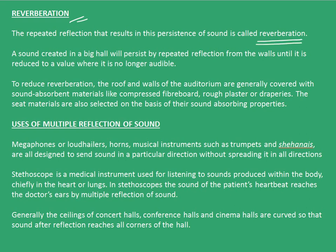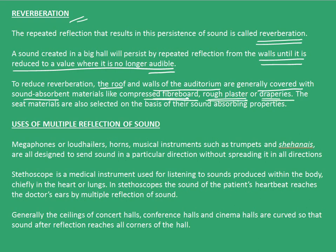A sound created in a big hall will persist by repeated reflection from the walls until it is reduced to a value which is no longer audible. To reduce reverberation, the roof and walls of the auditorium are generally covered with sound absorbent materials like compressed fiberboard, rough plaster, or draperies. The seat materials are also selected on the basis of their sound absorbing properties.